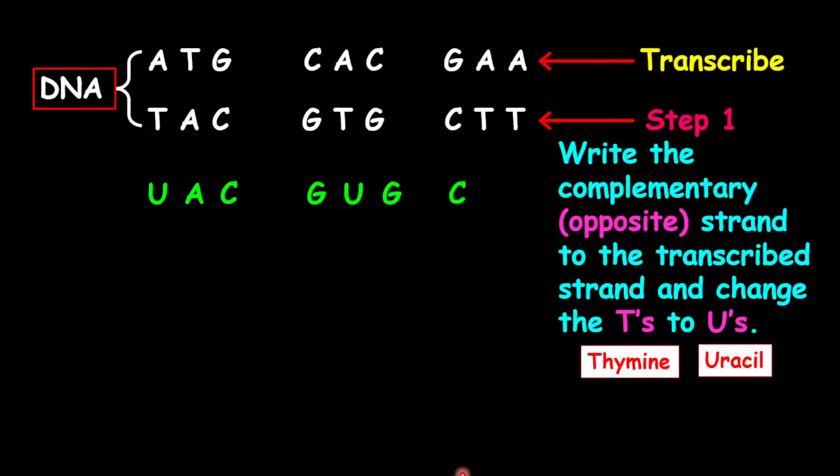Now our third codon based on this example here is GAA. We're going to read our GAA into a codon chart starting from a central point again looking for G, so we're going to start with G, A then A and this corresponds to the amino acid glutamic acid which is G-L-U, and that's our third amino acid.